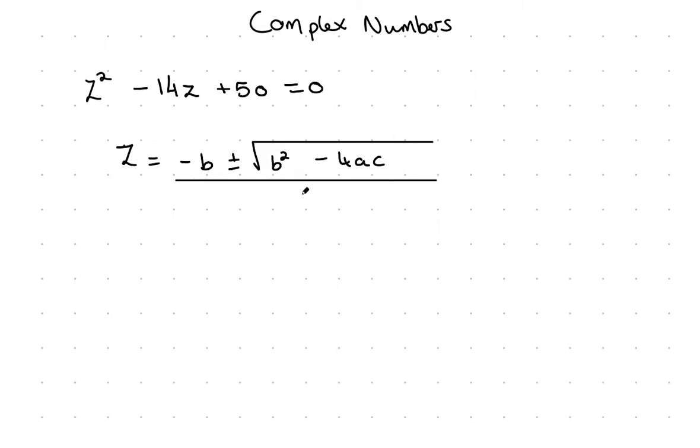The first step is sorting out what my a, b, and c values are. I know they're related to the coefficients. The coefficient in front of z², the coefficient of z squared, is always our a. My a in this scenario is 1, since there's 1z².